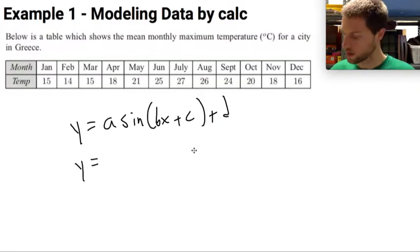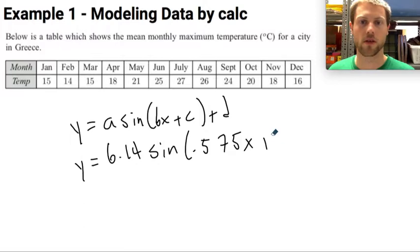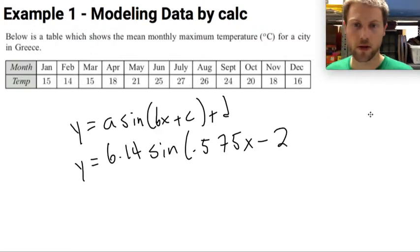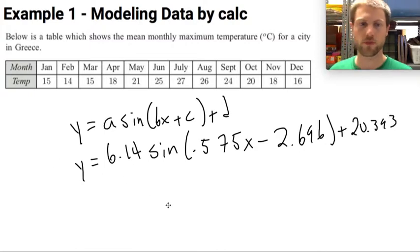It's Y equals 6.14 times sine of 0.575X and that's going to be minus 2.69 plus 20.393. All right.